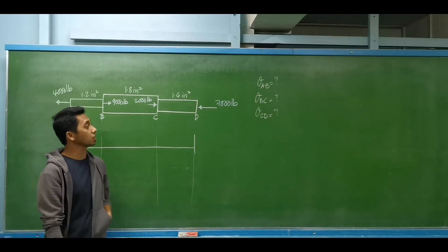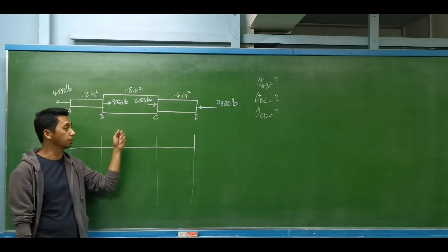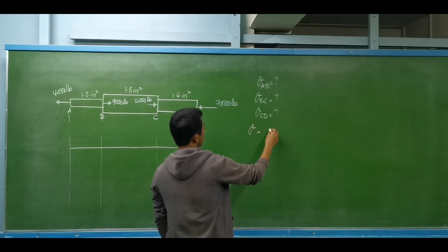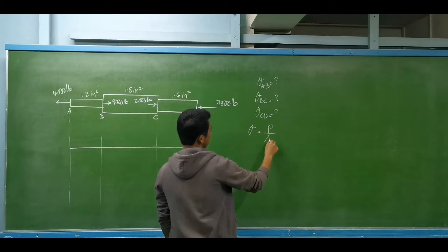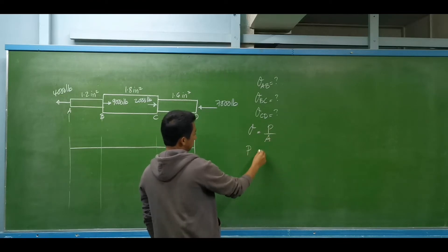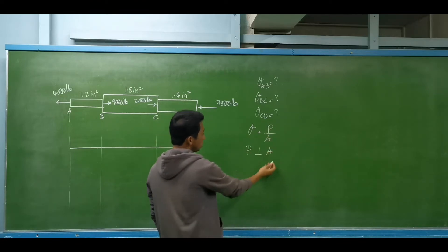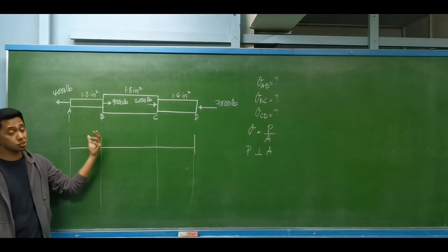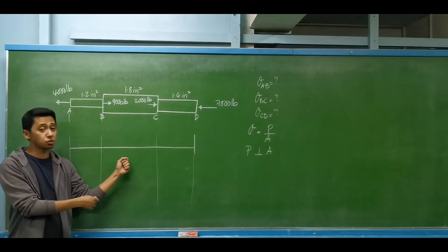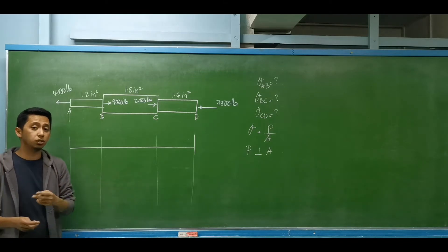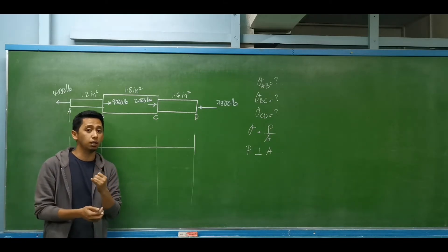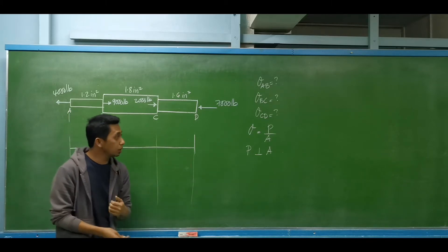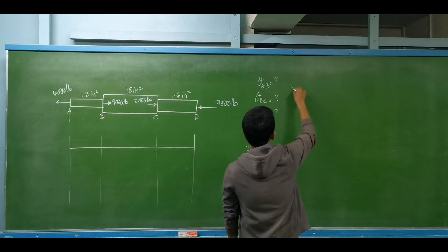We are required to determine the axial stress per segment. Axial stress or normal stress is equal to the force divided by the area, wherein the applied force should be perpendicular to the area. For this case, we have multiple segments and multiple axial forces. We may use two procedures: the first one is by equilibrium — we cut and expose each segment — and the other one is we can use the load diagram.